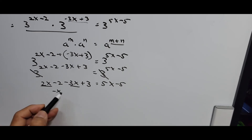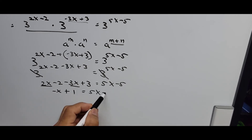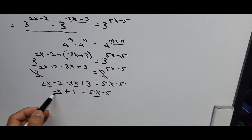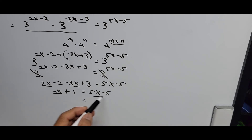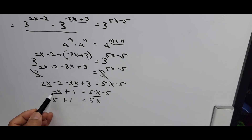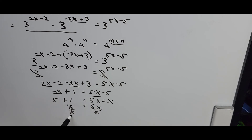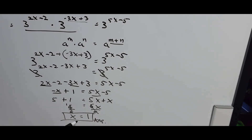Combining like terms on the left: negative x plus 1 equals 5x minus 5. Transposing, we get 5 plus 1 equals 5x plus x, so 6 equals 6x. Dividing both sides by 6, x is equal to 1.